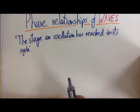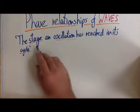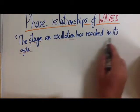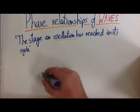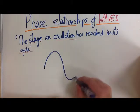Phase relationships are useful when we're talking about two waves meeting. It is described as the stage an oscillation has reached in its cycle. Now if that sounds a bit of a mouthful, let's try and break it down a little bit.